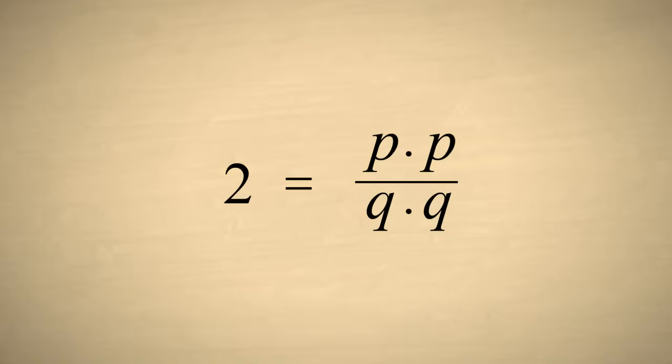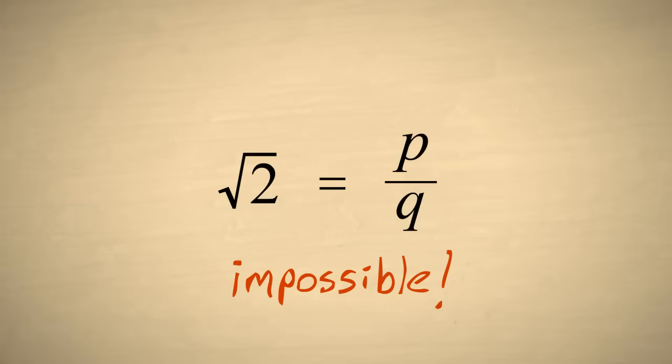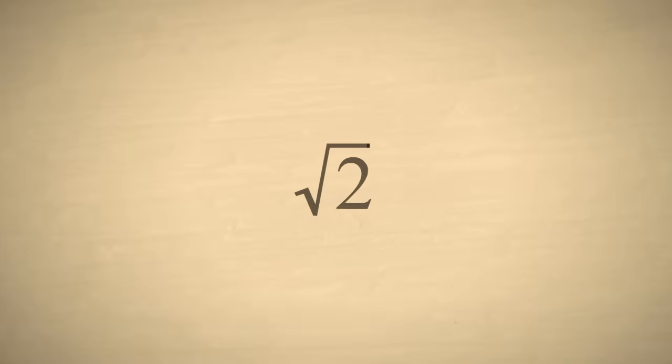Therefore, this is an impossible situation. Our original assumption that the square root of two can be represented by the ratio of two integers must be wrong. The square root of two must be some value which is not a rational number. A number which is not rational is called an irrational number.